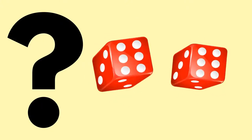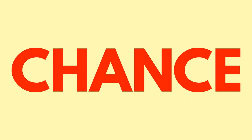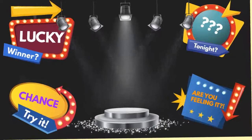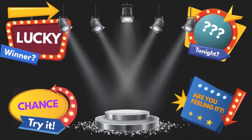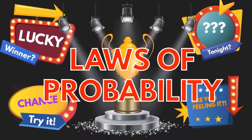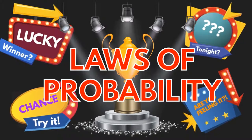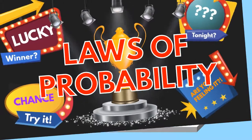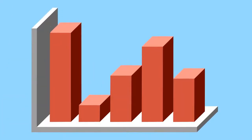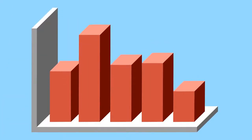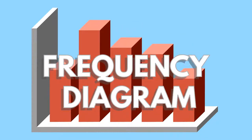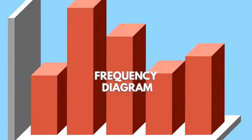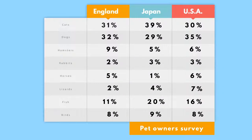Of course, there is always an element of chance when thinking about probability. Game shows are almost always based on chance. Your chance of winning is determined by the laws of probability. To determine the likelihood of an event occurring, we must record what we already know using a frequency diagram. This is where we record data in a table used to predict further outcomes.